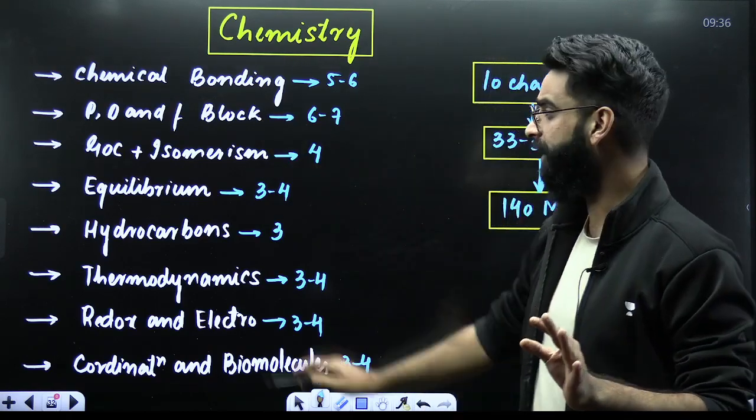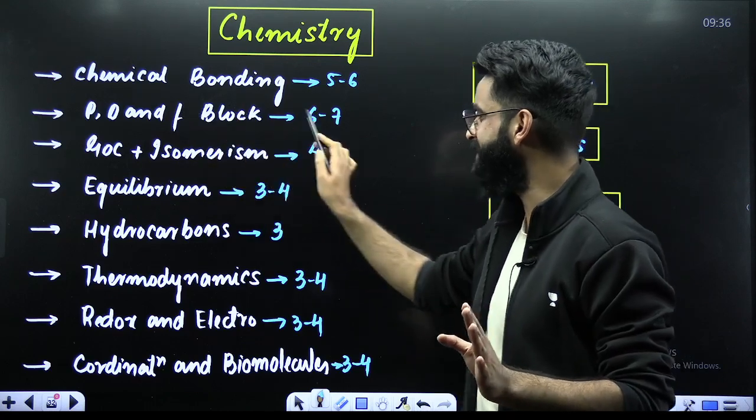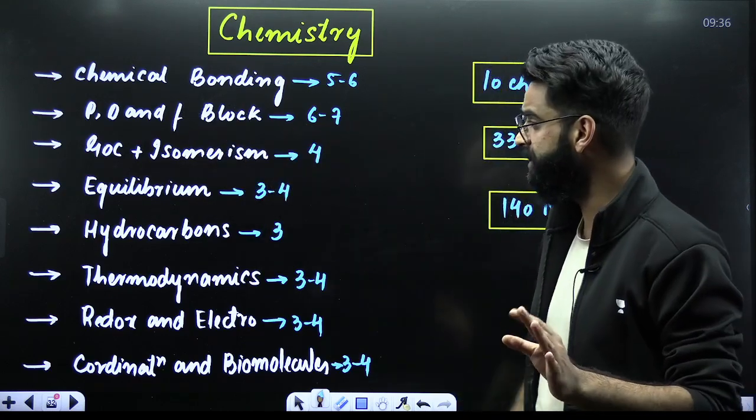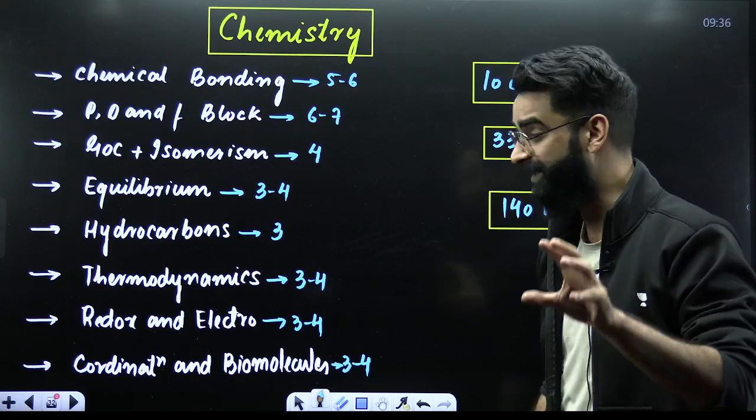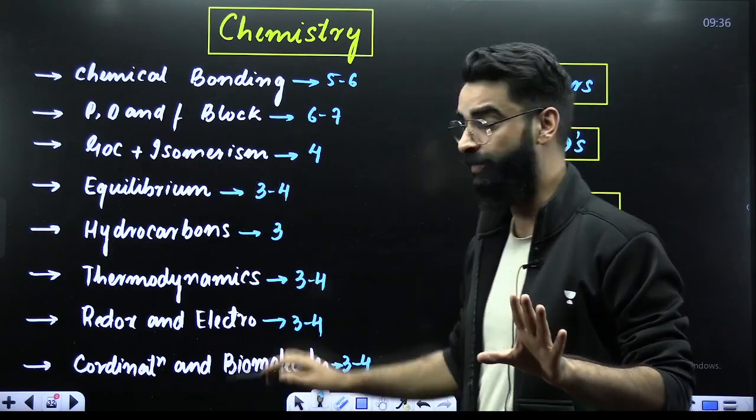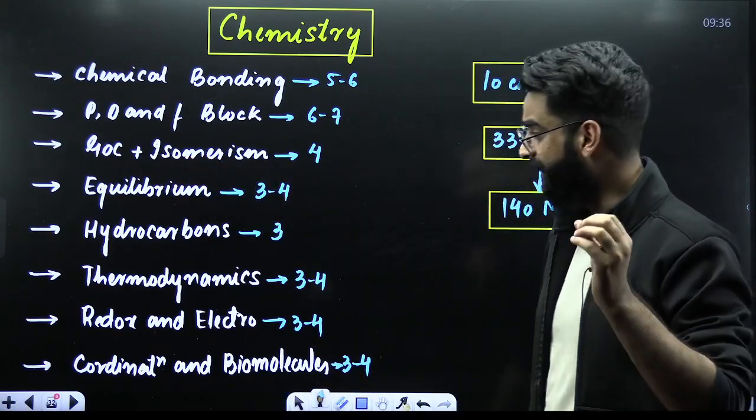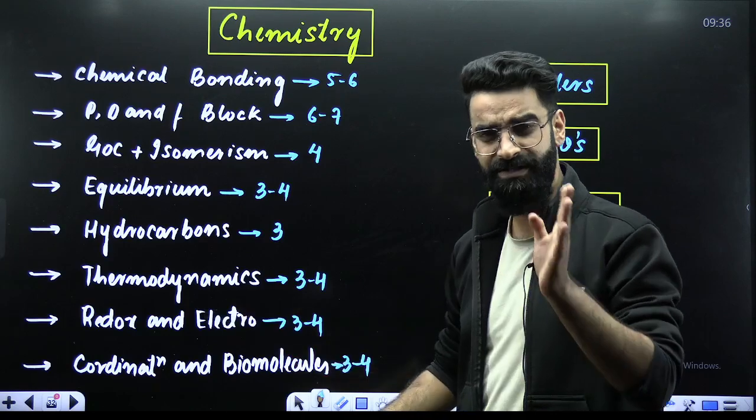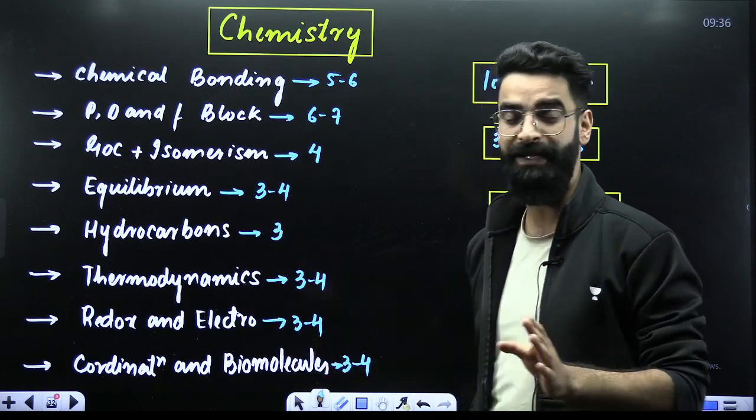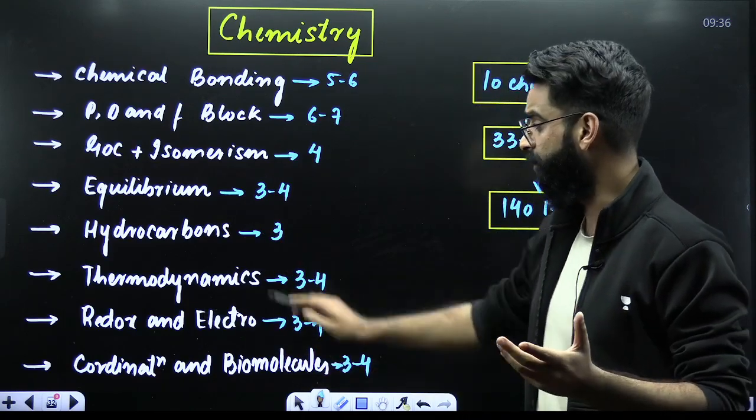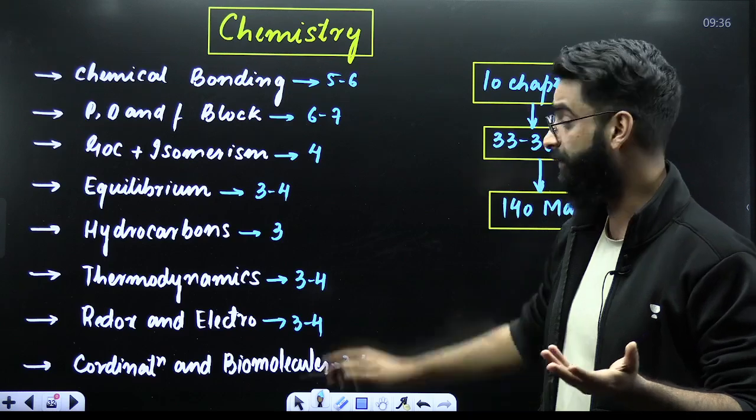Once you are done with Chemical Bonding, your P, D and F block elements consists of 6 to 7 questions. GOC and Isomerism from itself only, you'll be getting 4 questions. Equilibrium which involves Chemical plus Ionic, from this you'll be getting 3 to 4 questions. Your Hydrocarbon is again one important chapter, 3 questions.